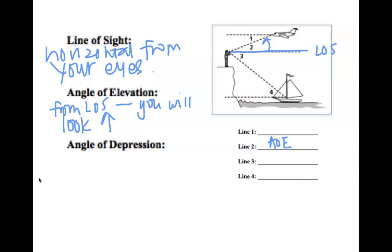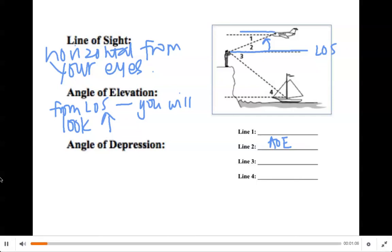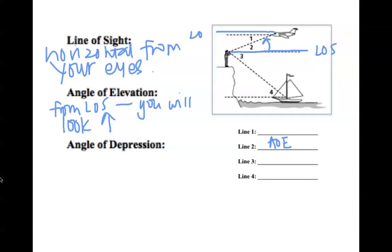Now if you look at the plane, this line is also going to be considered a line of sight — just a horizontal line. If you look at the ship, that line is also considered a line of sight. From the ship, you're looking up at that person, so this angle is going to be an angle of elevation as well. So line 4, we are going to label as angle of elevation.